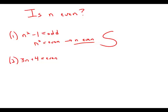Statement 2 tells us that 3n + 4 is even. Well, if we subtract 4 from an even number, we get another even number, so that means 3n must be even. Let's think